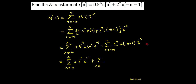With respect to the second term, I have u(-n-1), which is the time-shifted and reflected version of u(n). This signal exists from minus infinity till minus one. In that region, u(-n-1) is nothing but one. So I have 2 to the power n times z to the power minus n.